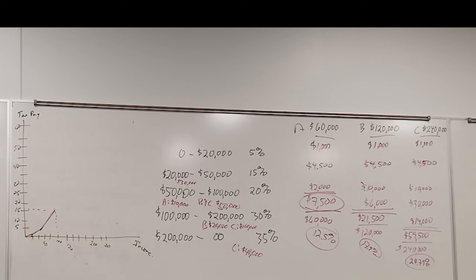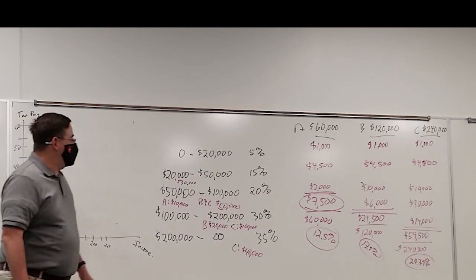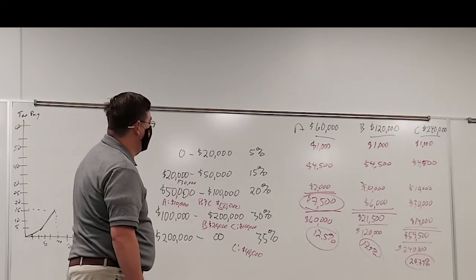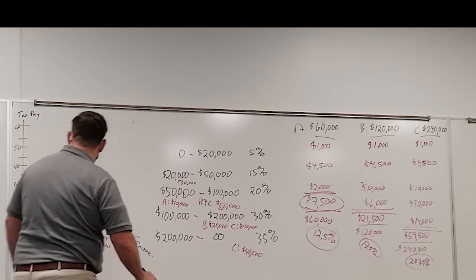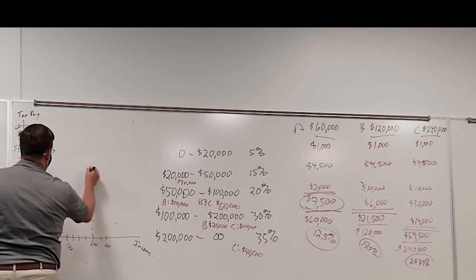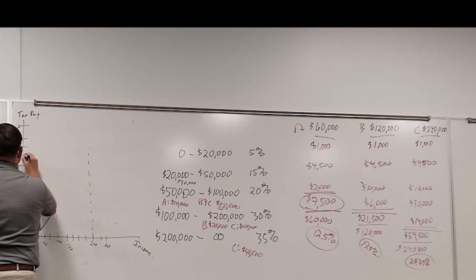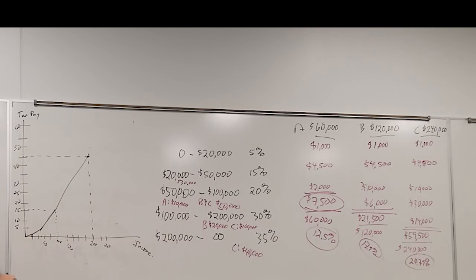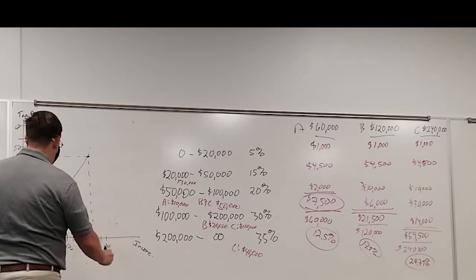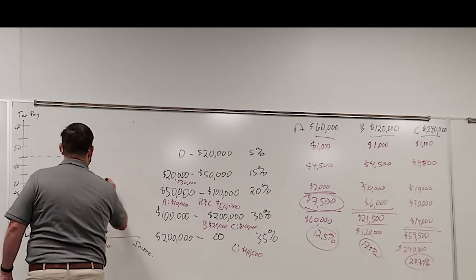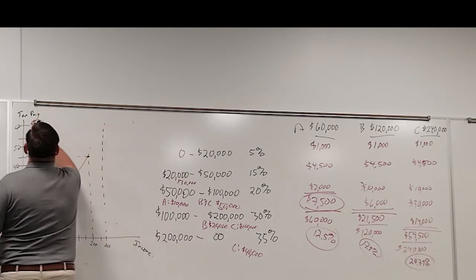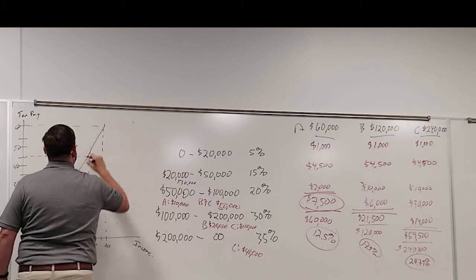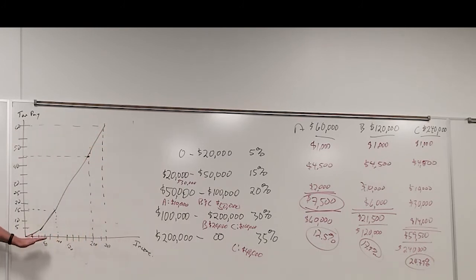If you earn $200,000, you're going to pay $45,000, $50,000. If you earn $240,000, you end up paying $60,000.